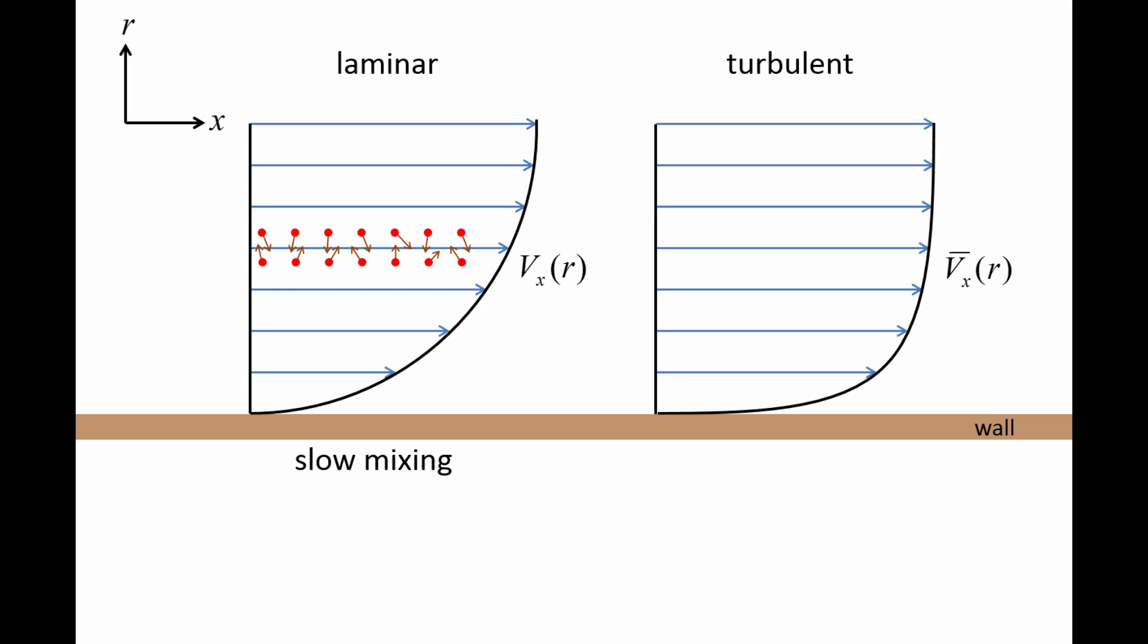Molecular collisions also occur in turbulent flows. However, eddies of various sizes transport fluid across the profile, greatly enhancing mixing compared to laminar flows. A consequence of this rapid mixing is that momentum and other properties become more uniform throughout the flow, resulting in a more uniform velocity profile.